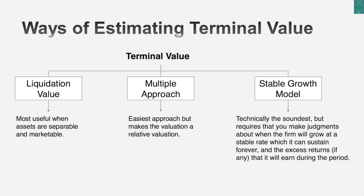Liquidation value and going concern value are both legitimate ways to get a terminal value. Here's the one way you should never use: applying a multiple to year 5 or year 10 numbers — an EBITDA multiple, a revenue multiple, or an earnings multiple. If you do that, you're really not doing intrinsic valuation; you're doing relative valuation. People who use relative valuation to get the terminal value and claim to have done a discounted cash flow valuation are presenting a relative valuation in disguise. So the next time you see a DCF valuation, check the terminal value — if it comes from a multiple, call it what it is: a forward relative valuation.